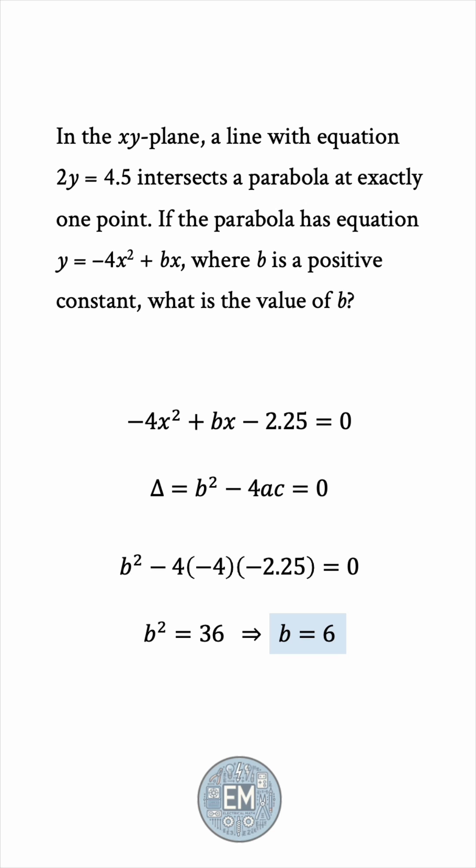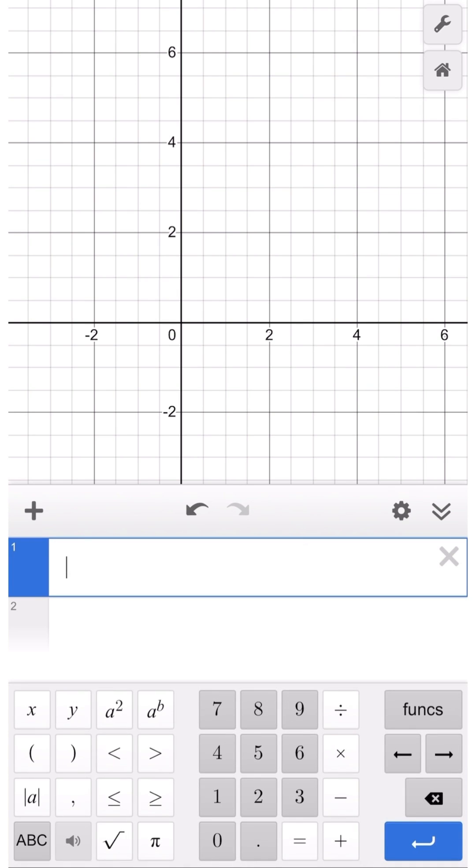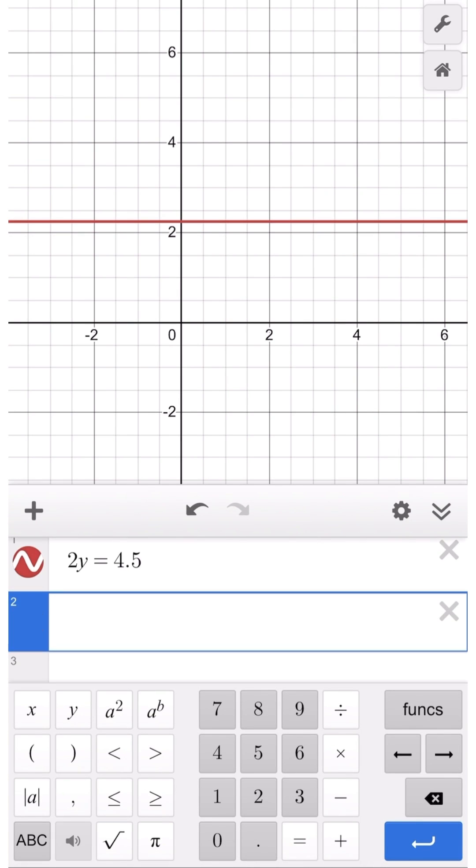For the digital SAT, you have access to a built-in Desmos calculator. So why not use that luxury? We'll input the equation of the line, and then the equation of the parabola, y equals negative 4x squared plus bx.